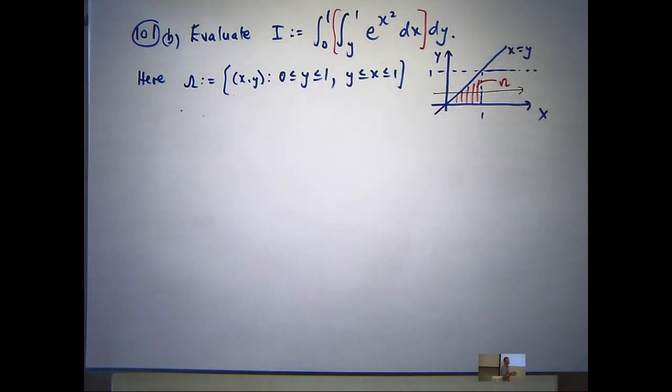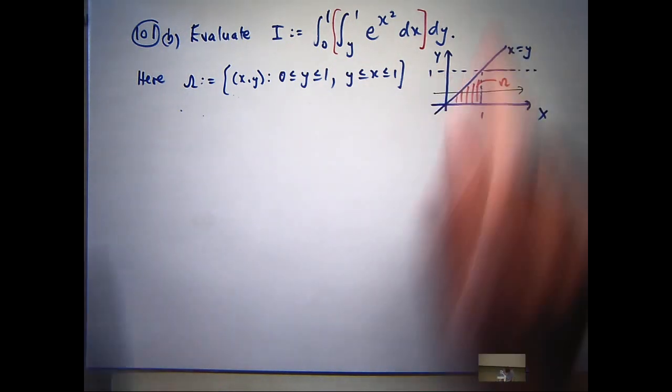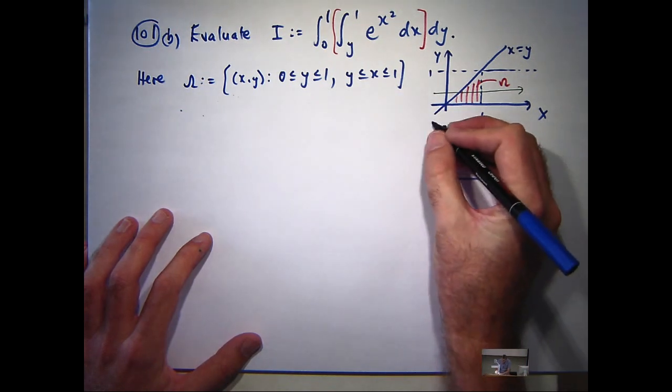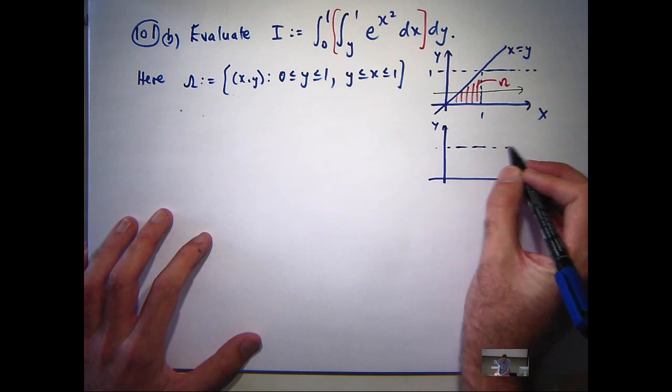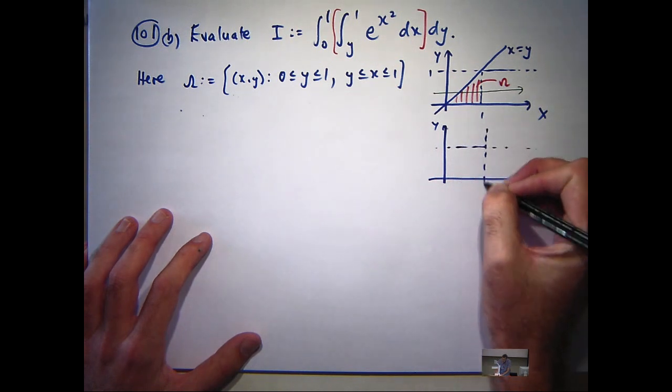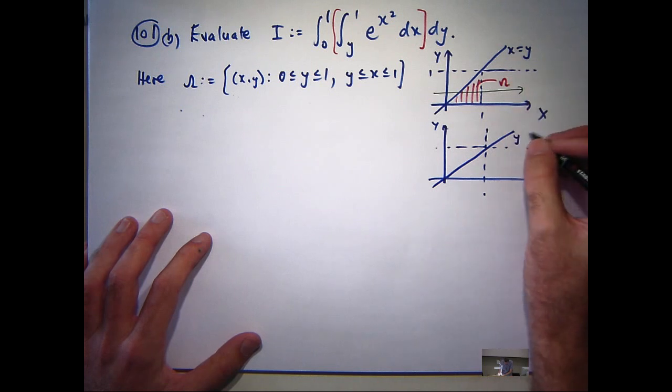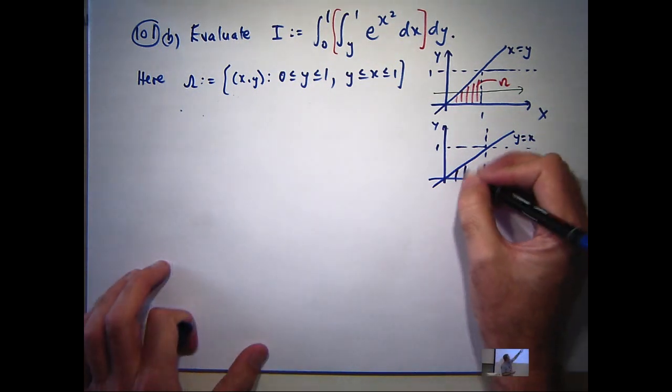Okay, so now what we want to do is re-describe that region somehow. Well, let's draw the same picture, but instead of using a horizontal line, let's use a vertical line. Okay? Now, I'm just going to re-label this. Instead of y equals x, x equals y, y equals x. 1 and 1. So here's our region here.